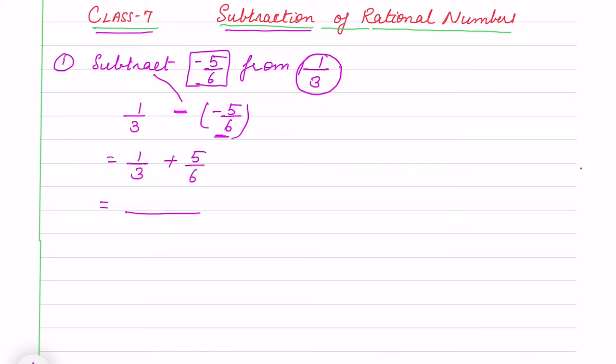I take LCM of 3 and 6, it is 6. 2 plus 5 that is 7/6 is the answer.